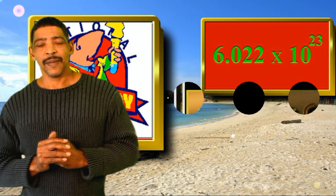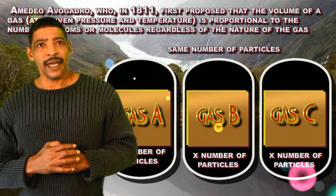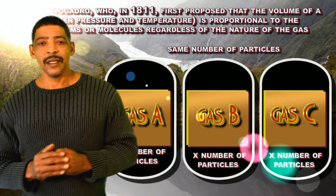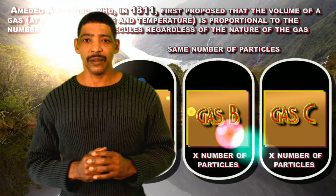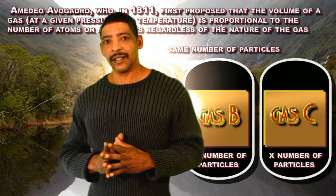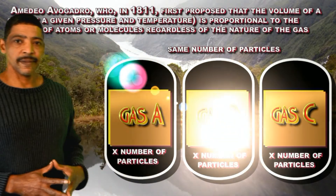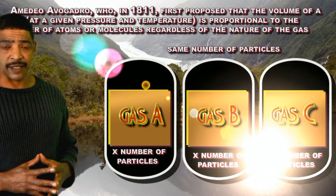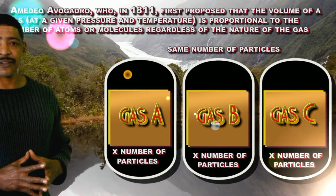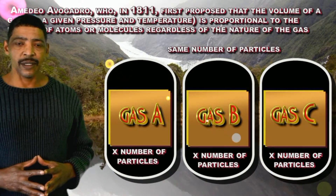Avogadro worked with gases and was the first scientist to propose that the volume of a gas at a certain temperature and pressure is proportional to the number of atoms or molecules, regardless of the nature of the gas. Consider gases A, B, and C, whose volume is apparently the same. If the pressure and temperature is also the same, then each container will hold the same number of particles.